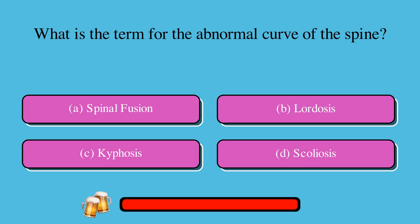What is the term for the abnormal curve of the spine? A. Spinal fusion, B. Lordosis, C. Kyphosis, or D. Scoliosis. The correct answer is D. Scoliosis.